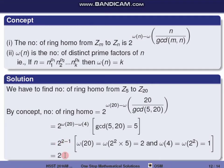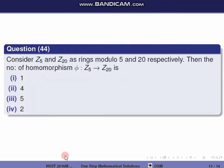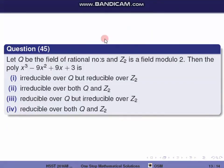So the number of ring homomorphisms is 2, and the correct option is the 4th one. Next question, question 45: Let Q be the field of rational numbers and Z2 be the field modulo 2. Then the polynomial f(x) = x³ - 9x² + 9x + 3.